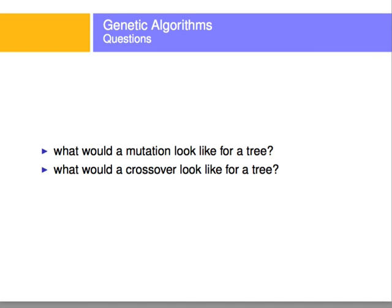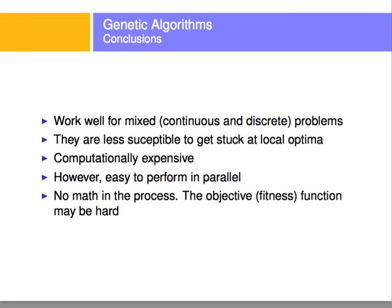Now, things to think about: what would a mutation look like for a tree? How would you represent a tree as a chromosome? And what would a crossover look like for a tree — how would crossovers be performed if you want to get a section of the tree and replace it on the other part of the tree? Those things you need to implement. Genetic algorithms work well for mixed problems, both continuous and discrete.